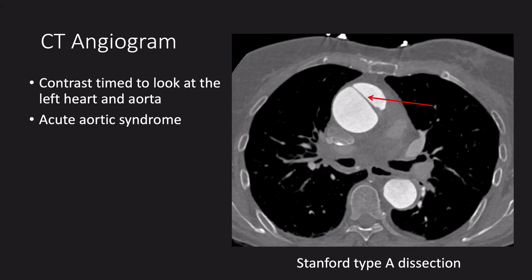A CT angiogram is a type of contrast scan where the contrast injection is timed to look at the aorta. We do this by giving a bolus of contrast quickly through a large cannula and flushing it through with saline. It's used to look at aortic aneurysms and acute aortic syndrome. Here we can see a dissection flap in the ascending aorta consistent with a Stanford type A dissection. A type A dissection involves the ascending aorta; a type B dissection starts in the descending aorta.